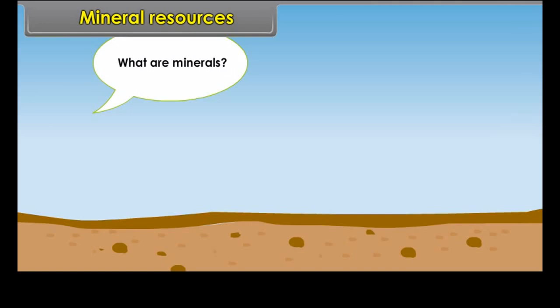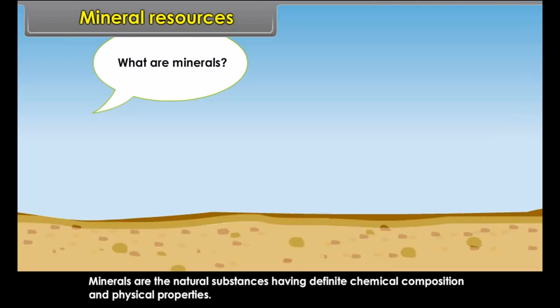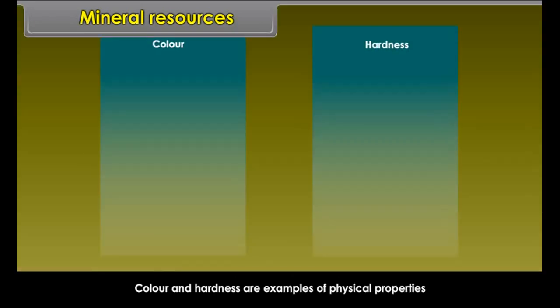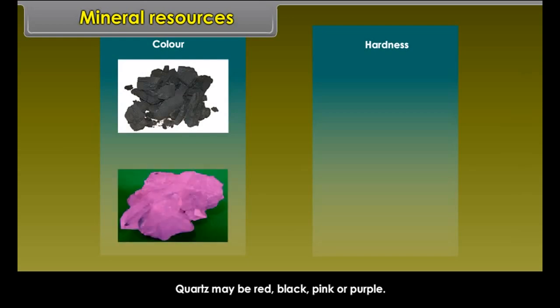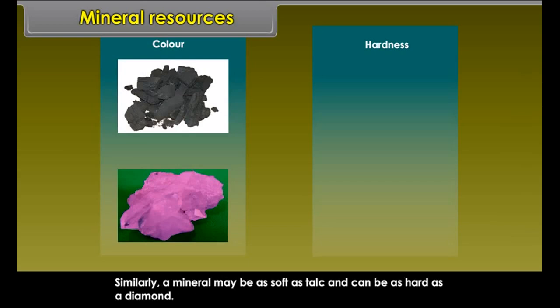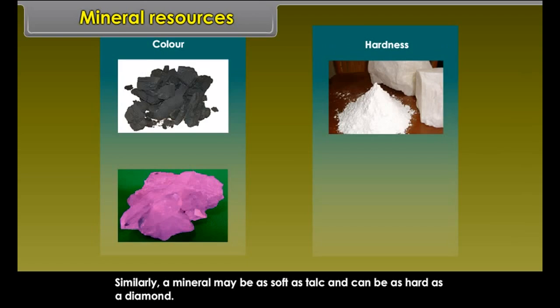What are minerals? Minerals are natural substances having definite chemical composition and physical properties. Color and hardness are examples of physical properties. Coal is black or brown, quartz may be red, black, pink or purple. A mineral may be as soft as talc and can be as hard as diamond.